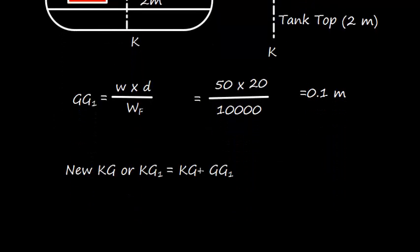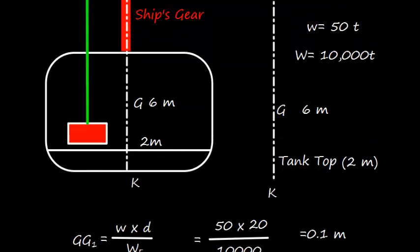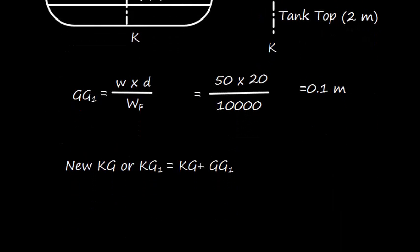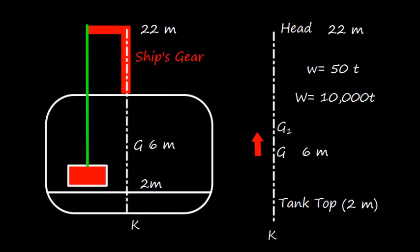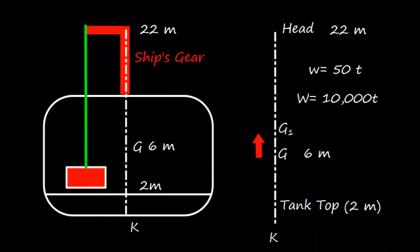The new KG, or KG1, will be KG plus GG1. We add GG1 because the weight is shifted in the upward direction, so G1 shifts upward. Then we get the new KG, which is 6 plus 0.1 equal to 6.1 meters. So it is very important to understand that if a weight is hanging by the ship's derrick head, the weight acts at the ship's head and it behaves as though the center of gravity has increased.